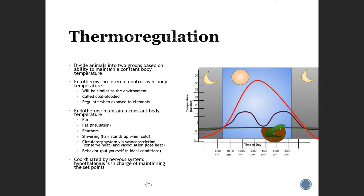We divide animals into two big groups based on whether they can maintain a constant body temperature. Ectotherms have no internal control over body temperature — commonly called cold-blooded animals — and their body temperature is very similar to the environment. They regulate by exposing themselves to the elements. For example, a lizard that is cold-blooded will go out during warmer parts of the day to raise its temperature, and at night it goes back down. It may need to go out multiple times a day to sun itself to warm back up.